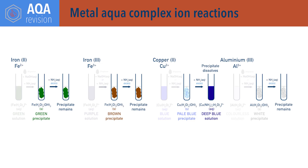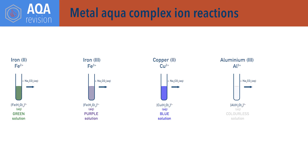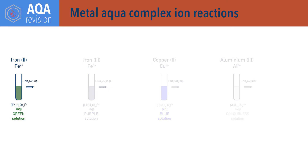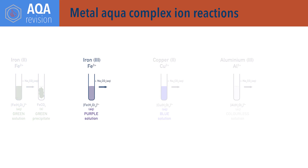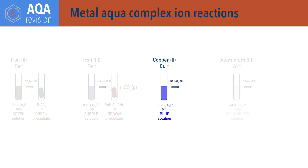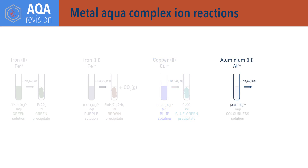If sodium carbonate solution is added to solutions of each metal aquacomplex ion, precipitates form. Iron(II) solution forms iron(II) carbonate, FeCO₃, which is green. Iron(III) solution forms iron(III) hydroxide, [Fe(H₂O)₃(OH)₃], which is brown, and carbon dioxide gas is also released. Copper(II) solution forms copper(II) carbonate, CuCO₃, which is blue-green. Aluminium(III) solution forms aluminium(III) hydroxide, [Al(H₂O)₃(OH)₃], which is white, and carbon dioxide gas is also released.